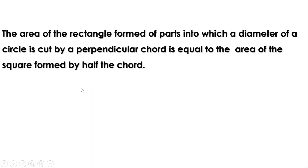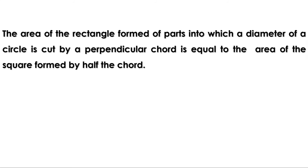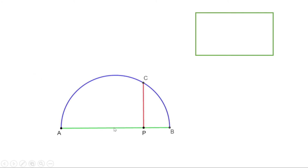That means the area of the rectangle formed by parts into which a diameter of a circle is cut by a perpendicular chord is equal to the area of the square formed by half the chord. This idea is very important. We can apply this in different situations. For example, we can use this to change a rectangle into a square of the same area. Suppose we have to draw a square having the same area as a given rectangle, where PA and PB are equal to the length and breadth of the rectangle. Since PA into PB equal to PC square, if we draw a square with side PC, its area will be equal to the area of the rectangle.